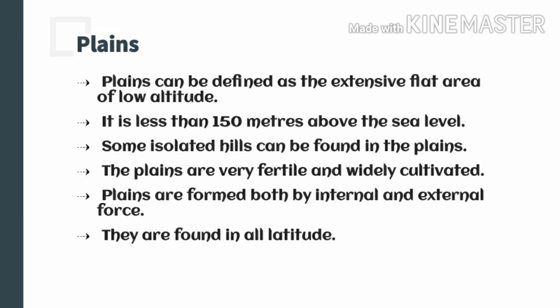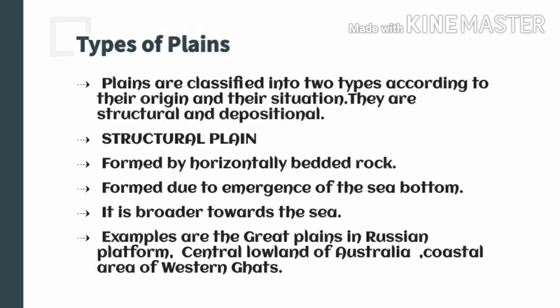Plains are also found near the seacoast and in the interior of the continent, so there is no hard and fast rule as to where plains are found. We can bifurcate plains into different types according to where they are situated or how they have been formed — that is the mode of origin. Plains can be divided into two types: the structural plain and the depositional plain.